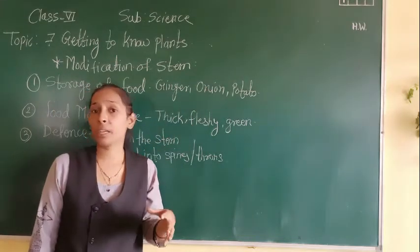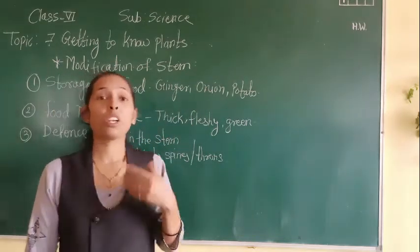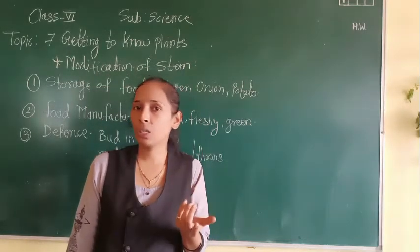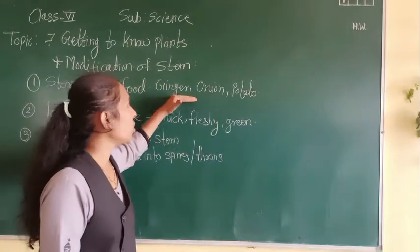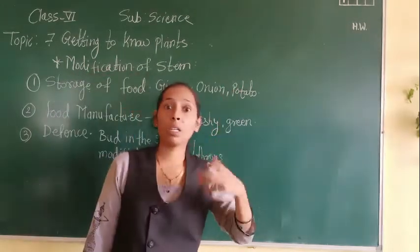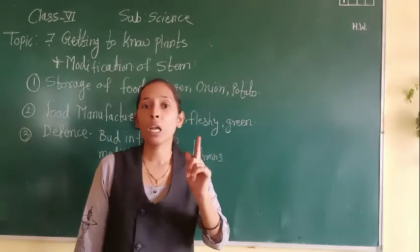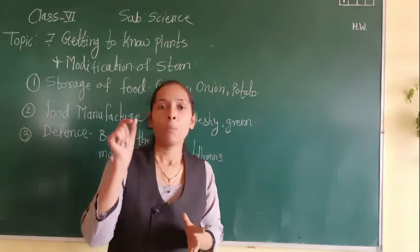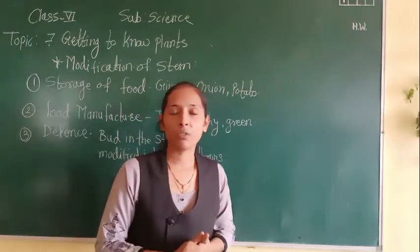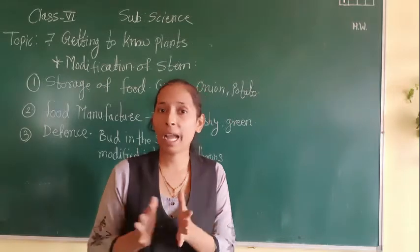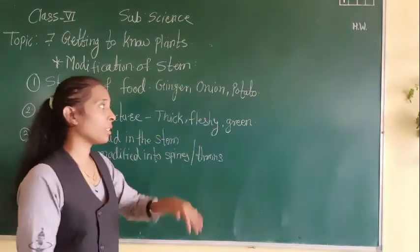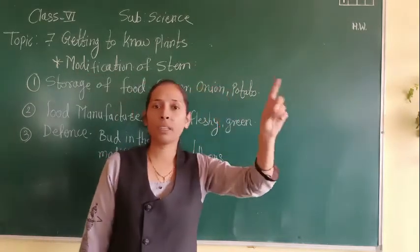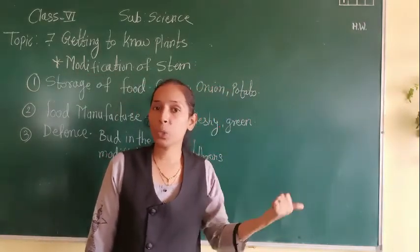Why do we call ginger, onion, and potato stems even though they are growing underground? Because a stem has nodes on it. These ginger, onion, and potatoes also have nodes on them. In your previous class, you have seen that potato has buds present on it - those buds are also called eyes. Buds are present only on stems, and that is the reason ginger, onion, and potato are underground stems that store food.